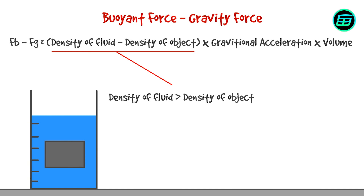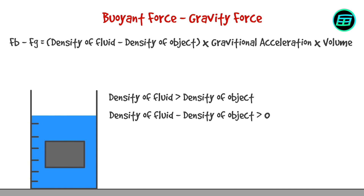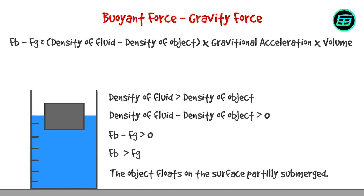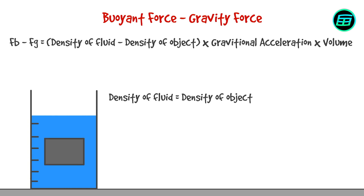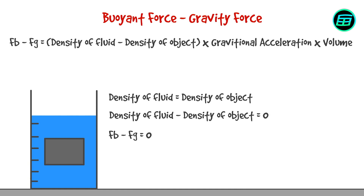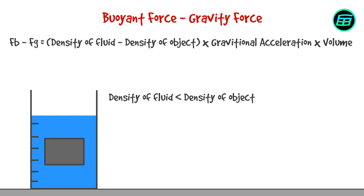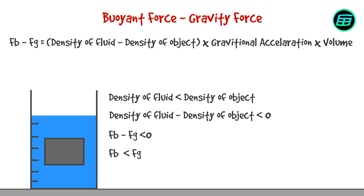If the density of the fluid is greater than the density of the object, buoyant force minus gravity force will be positive, so the object will accelerate upward, rise to the surface, and float partially submerged. If the density of fluid equals the density of the object, buoyant force minus gravity force will be zero, so the object will float fully immersed. If the density of fluid is less than the density of the object, buoyant force minus gravity force will be negative, so the object will accelerate downward and sink to the bottom.